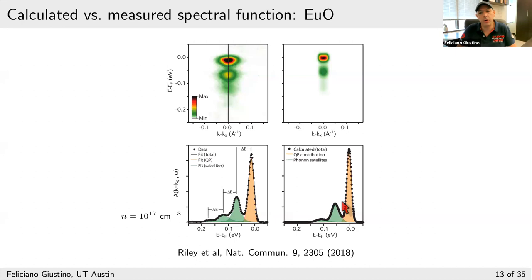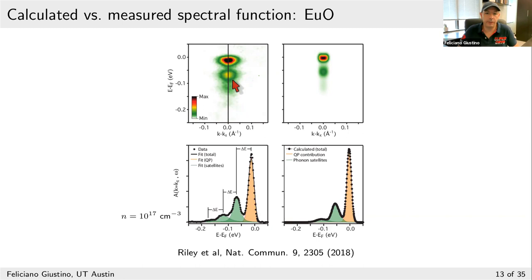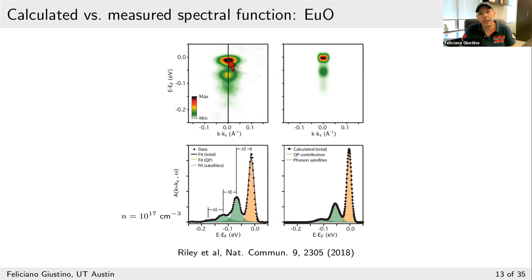Once you have this calculation and discuss it with experimentalists, the next question is: can you tell me how the polaron looks and what is its wave function? The trouble is that you probably will not find a way to extract the polaron wave function from this spectral function. That was for us the beginning of a long journey to understand how to get polaron wave functions. Another question raised by colleagues: since these spectra are localized in momentum space, can we Fourier transform to obtain the real-space extent of the polaron? The answer is no — this localization reflects the size of the Fermi wave vector, not the polaron size.